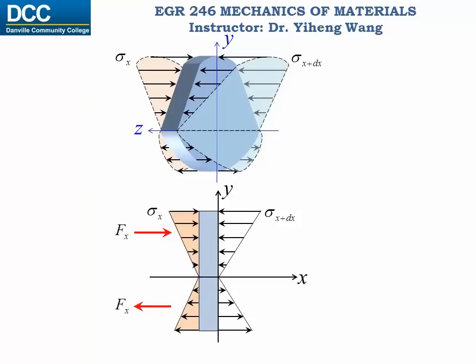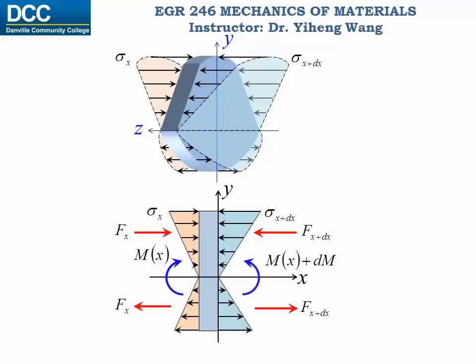The two forces cancel each other out in magnitude, but they create a pure couple moment that equals the bending moment M_x at this location. Similarly, integrating the other part of the bending stress gives another force of equal magnitude and opposite direction. These two forces also cancel, creating a pure couple moment equal to the bending moment at that location. The resultant force along the x-direction is still zero, consistent with our previous analysis.